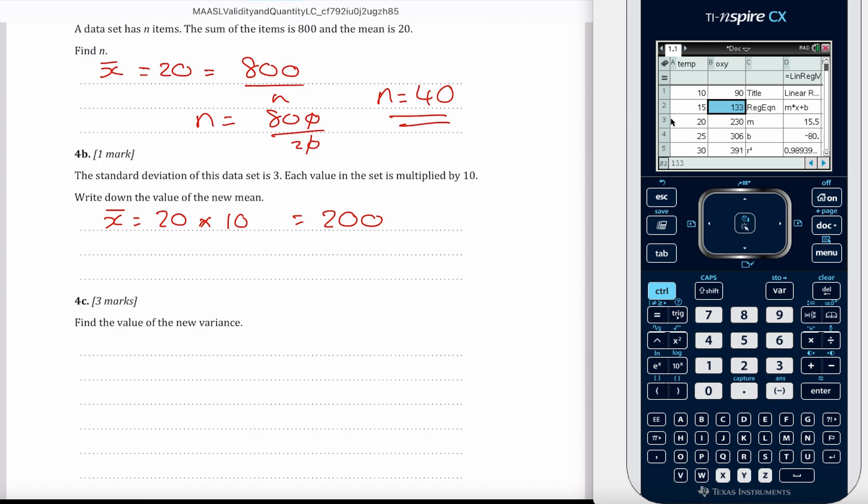Okay, the value of the new variance. The variance is represented by sigma squared. Sigma is the standard deviation.